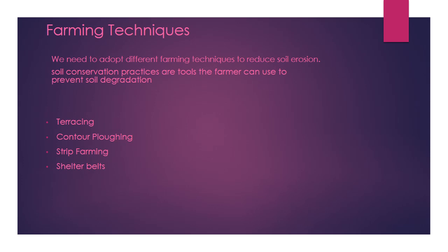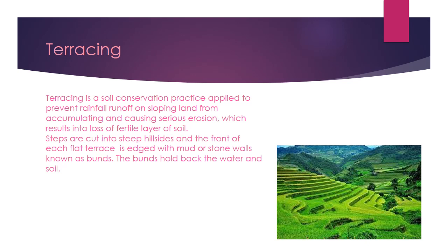Specifically, we are emphasizing some farming techniques to reduce soil erosion, which are terracing, contour plowing, strip farming, and shelter belts. First, we will discuss terracing. Terracing is a soil conservation practice applied to prevent rainfall runoff on sloping land from accumulating and causing serious erosion, which results in loss of the fertile layer of soil. Steps are cut into steep hillsides, and the front of each flat terrace is etched with mud or stone walls, known as bunds. The bunds hold back the water and soil. You can see these types of steps in the diagram.